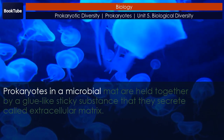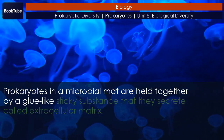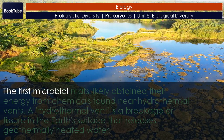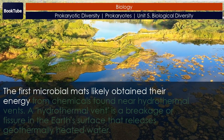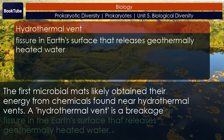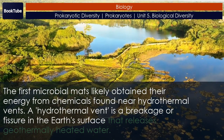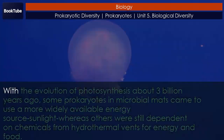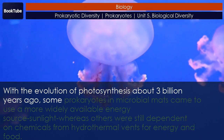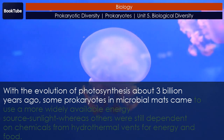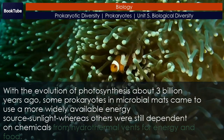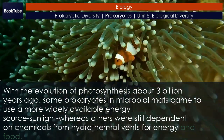Prokaryotes in a microbial mat are held together by a glue-like sticky substance that they secrete, called extracellular matrix. The first microbial mats likely obtained their energy from chemicals found near hydrothermal vents — a breakage or fissure in the Earth's surface that releases geothermally heated water. With the evolution of photosynthesis about 3 billion years ago, some prokaryotes in microbial mats came to use a more widely available energy source — sunlight — whereas others were still dependent on chemicals from hydrothermal vents for energy and food.